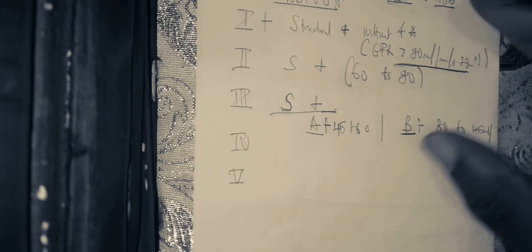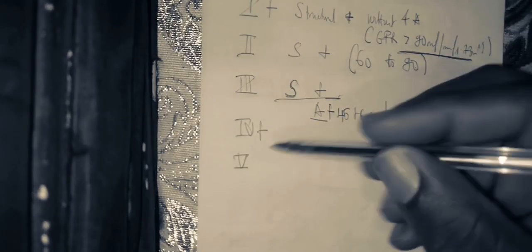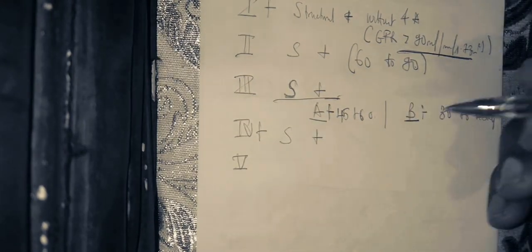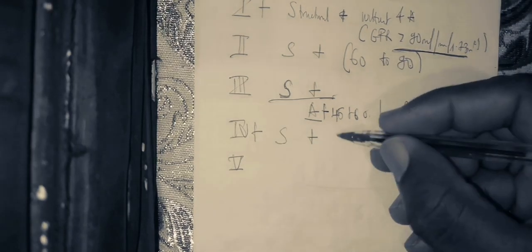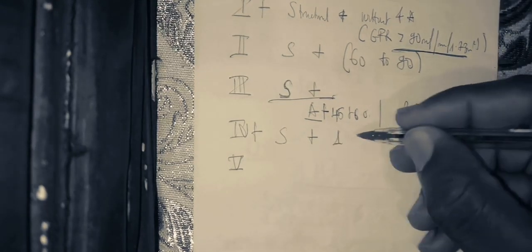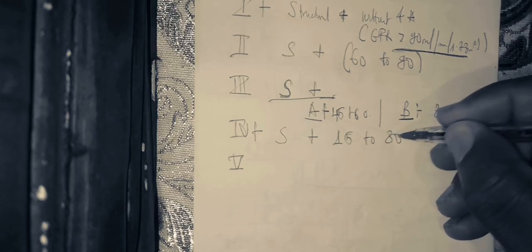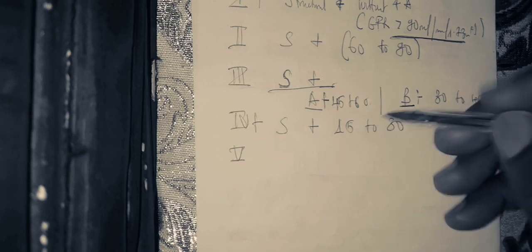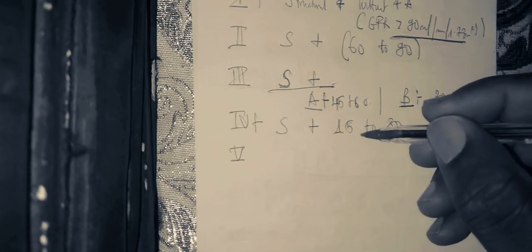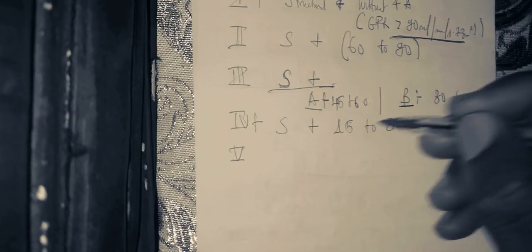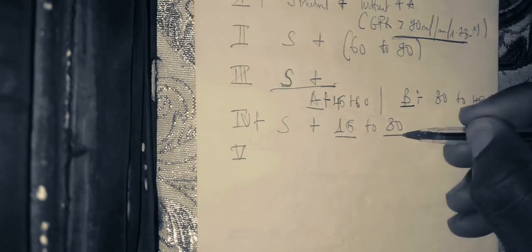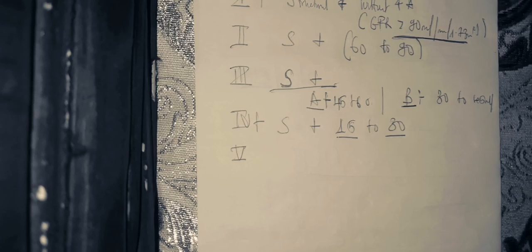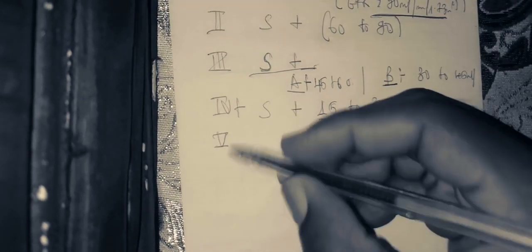The next one is CKD Stage 4, which is a structural abnormality plus a functional abnormality of 15 to 30 mls per minute as a glomerular filtration rate — that is 15 to 30 mls per minute per 1.73 m².